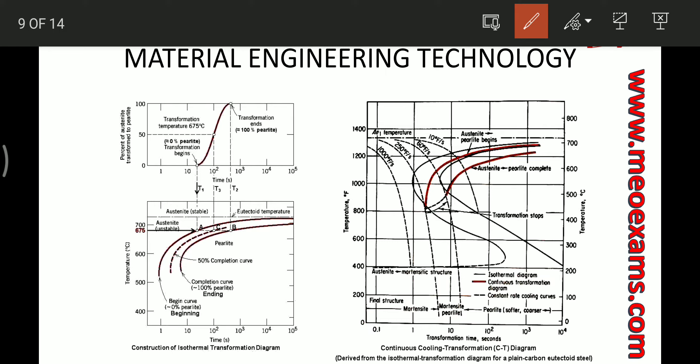The TTT curve and the CCT curve are important for understanding microstructure formation. CCT curves are used in real practice because in reality cooling cannot take place 100% at constant temperature, whereas TTT curves represent cooling at constant temperature. Another key difference is that bainite transformation does not take place in CCT curves, while in TTT curves there are distinct regions for pearlite, bainite, and martensite microstructures.